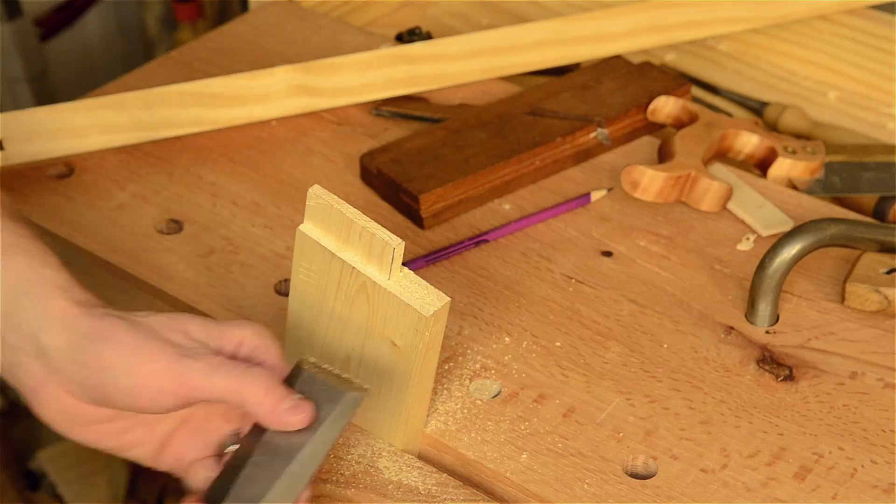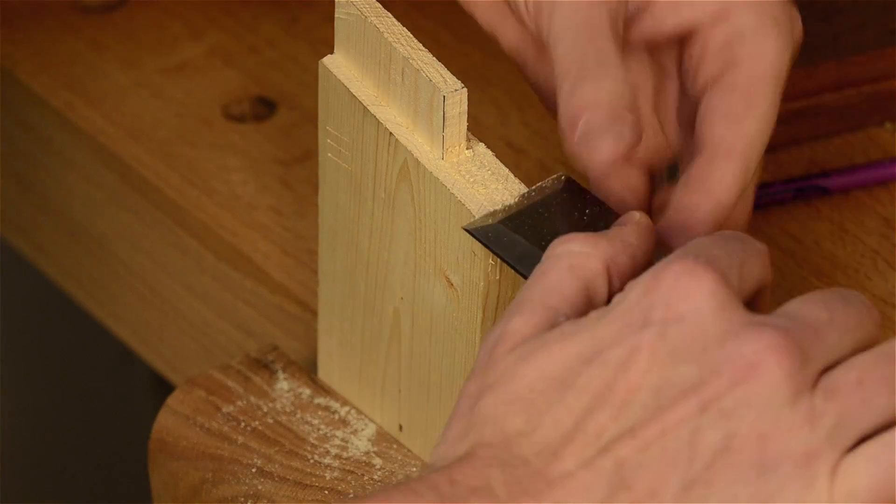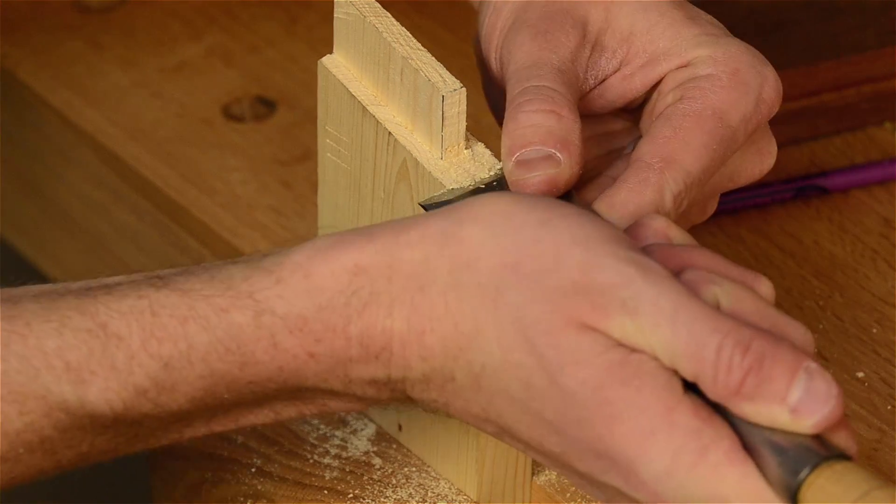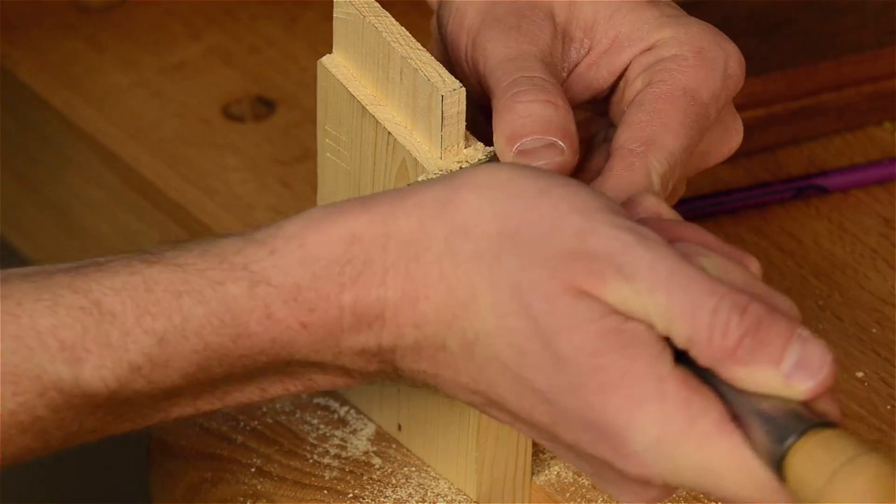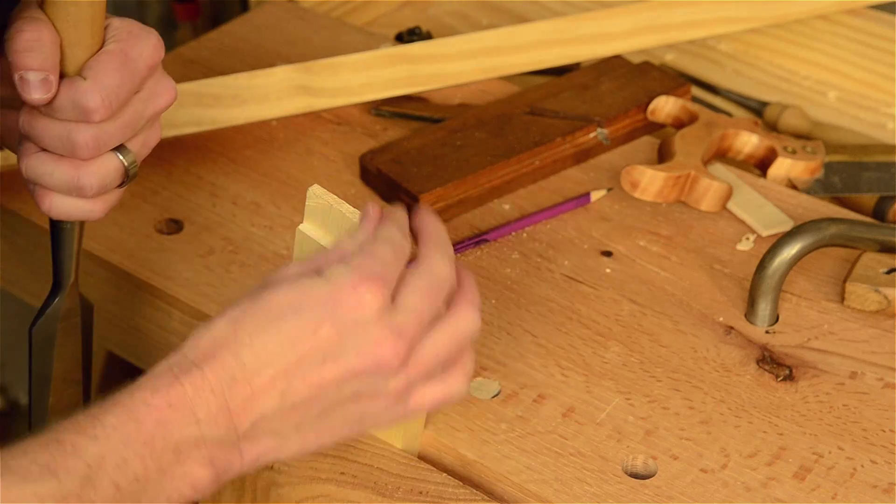And then I use a little chisel. One that is wider than the board here. So it can rest on the shoulders. And just pare that off. And clean it off. So that little stub is gone. And that is really clean.